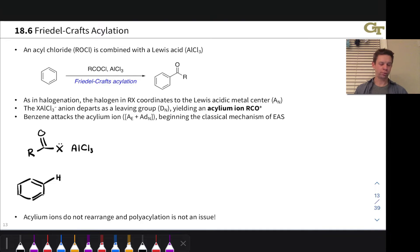An acyl chloride is a species that contains an acyl group, which is some organic group linked to a carbonyl like this. That acyl group is linked to a chloride.